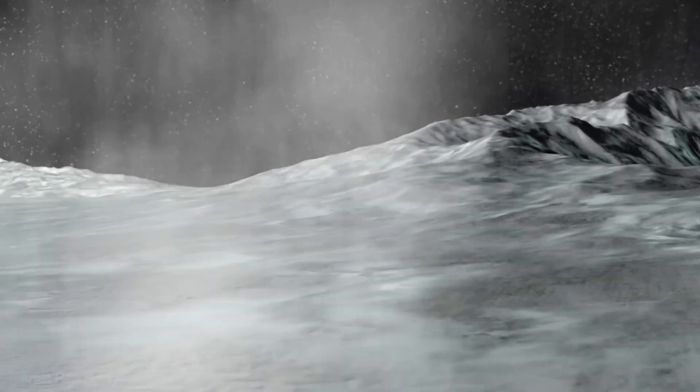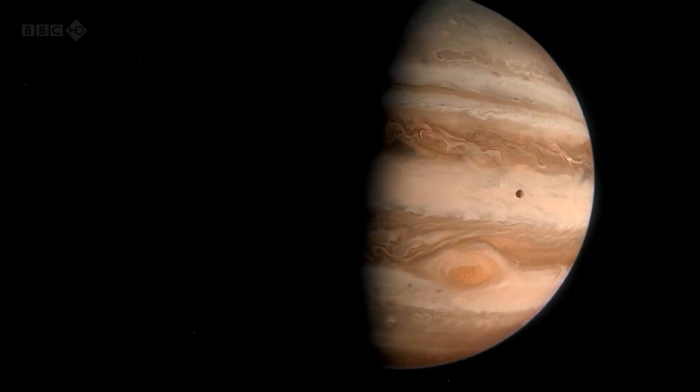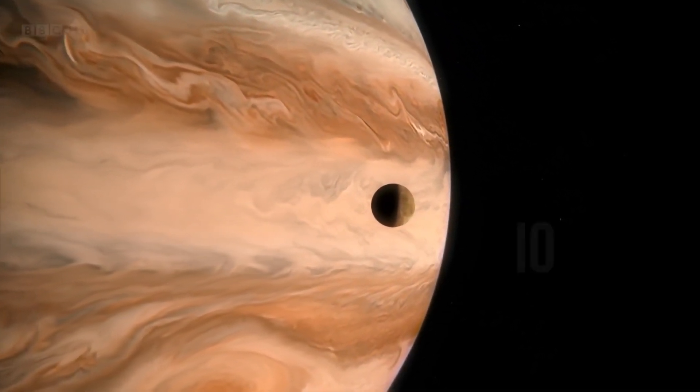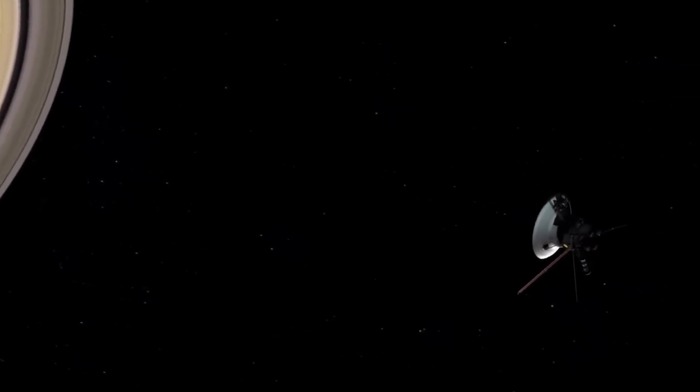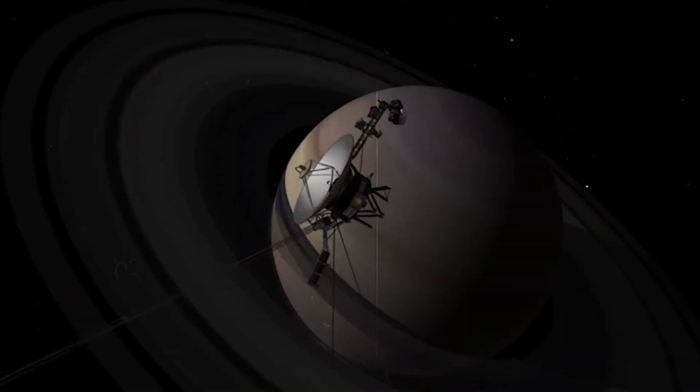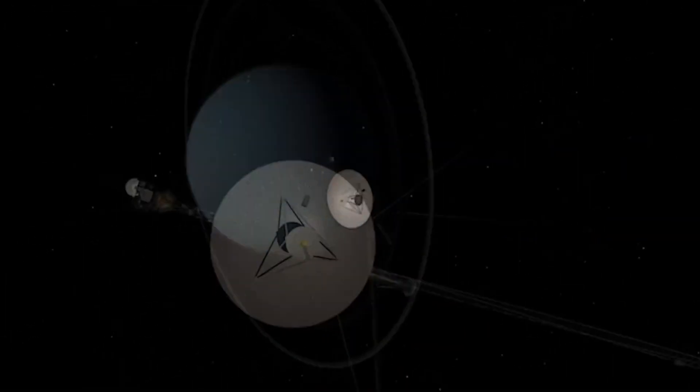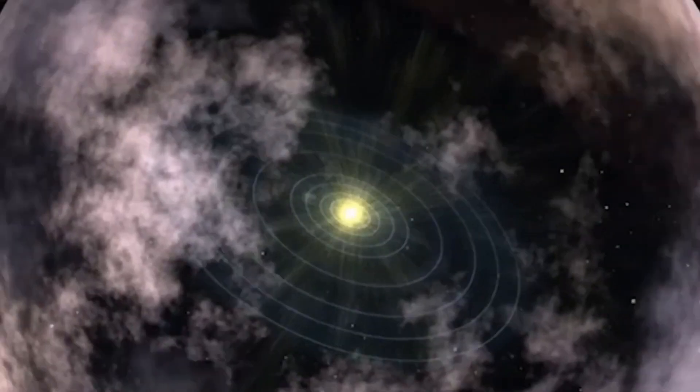The fact that such breakneck speeds are also necessary in the vast expanses of the universe is shown by the following: although Voyager 1 was already on its way to the outer reaches of the solar system after passing Saturn in November 1980, it took until August 2012 before it reached the so-called heliopause.